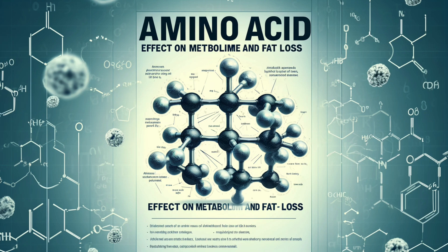Appetite regulation: certain amino acids, like tryptophan and phenylalanine, can influence neurotransmitters in the brain, such as serotonin and dopamine. These neurotransmitters play a role in appetite regulation and satiety. Adequate protein intake, which provides essential amino acids, can help control appetite and reduce overall calorie intake, contributing to fat loss.